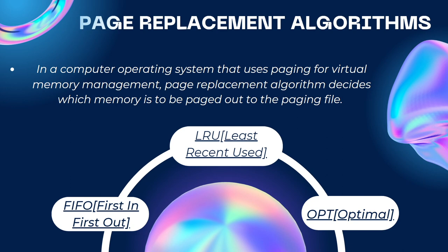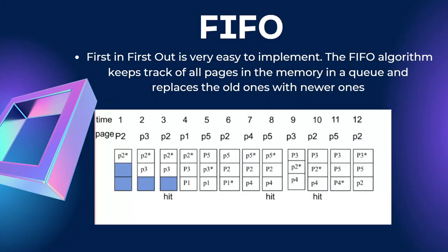I'll be explaining what a page replacement algorithm is. In technical terms, a page replacement algorithm determines which memory page is to be paged out to the paging file in an operating system that uses paging for virtual memory management. In simple words, page replacement refers to a scenario where a page from main memory should be replaced by a page from secondary memory. Page replacement occurs due to page faults. The various types of page replacement algorithms are FIFO (first in first out), LRU (least recently used), and optimal page replacement.